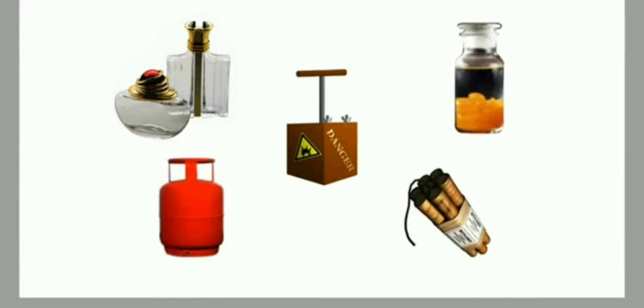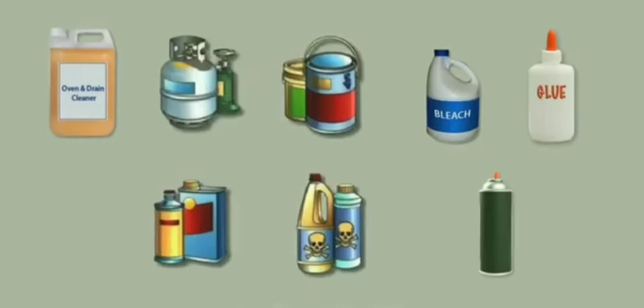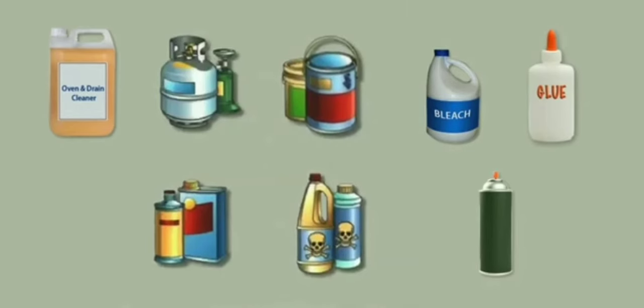Dangerous goods are articles or substances which are capable of posing a risk to health, safety, property, or the environment. A few examples of dangerous goods are pesticides, petrol, paint, gas cylinders, oven and drain cleaners, bleach, glues, and aerosols, which are potentially dangerous goods.